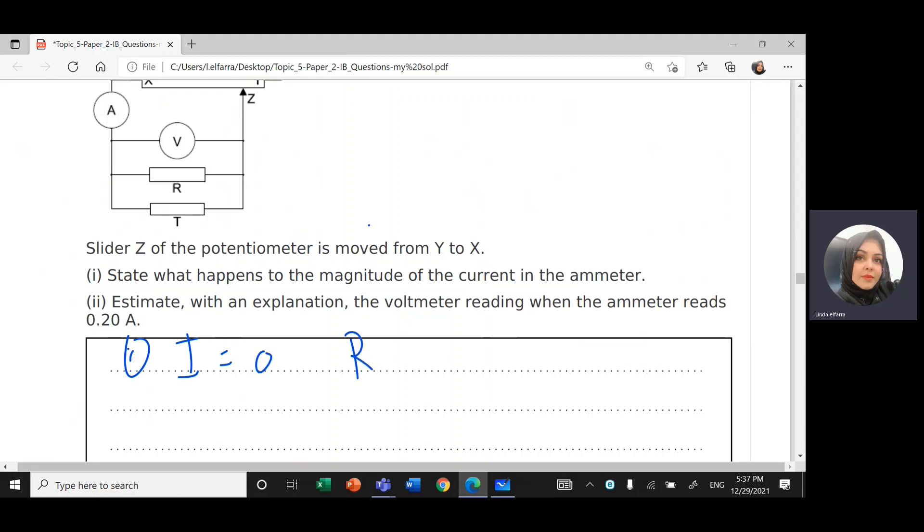So the current I will become zero. Why? Because R here, R is maximum at position X, R is maximum. Now the tricky here, I'm trying my best to solve most of the question that has a trick in them. So this is one of the tricky questions here.